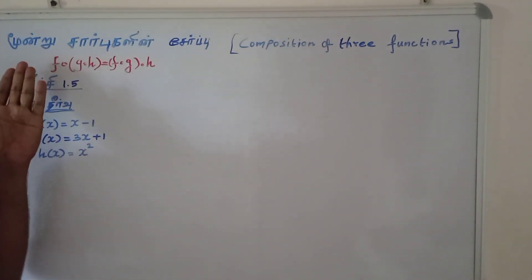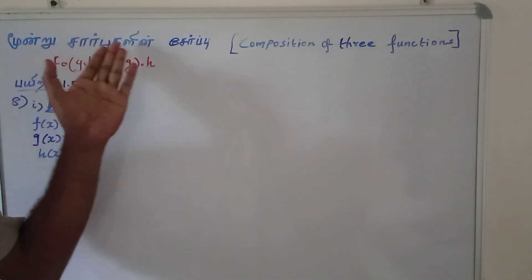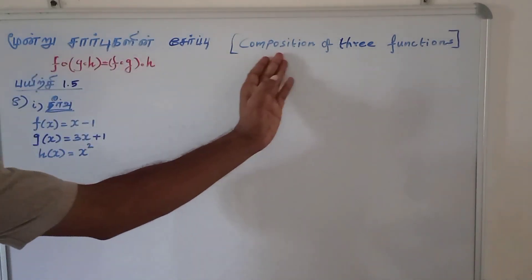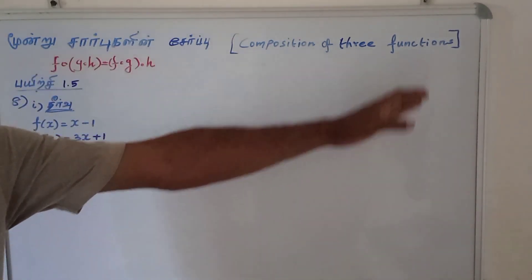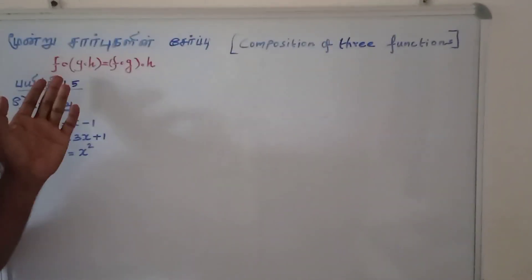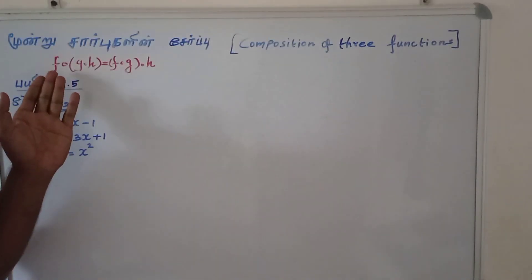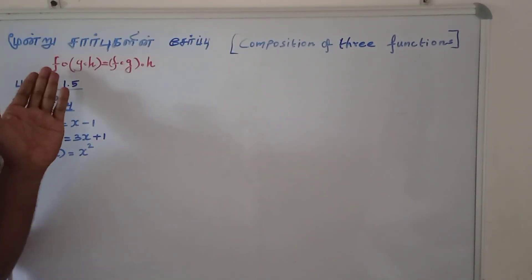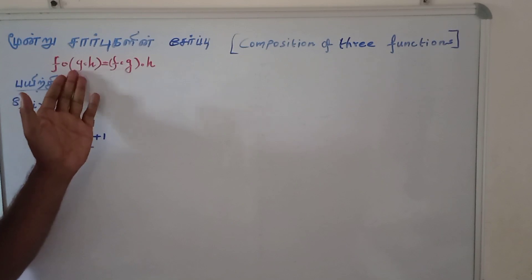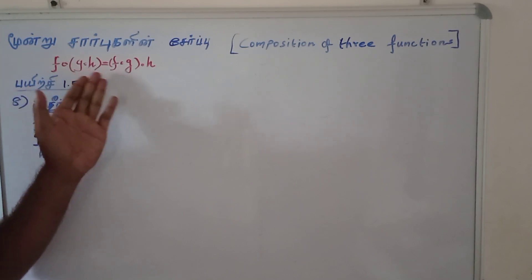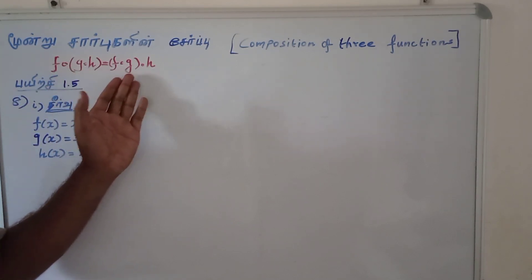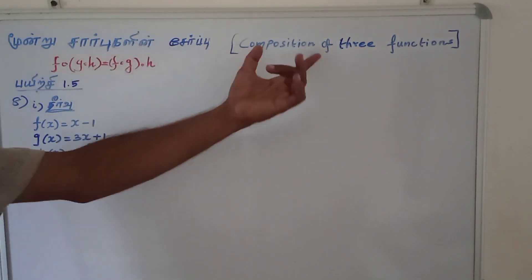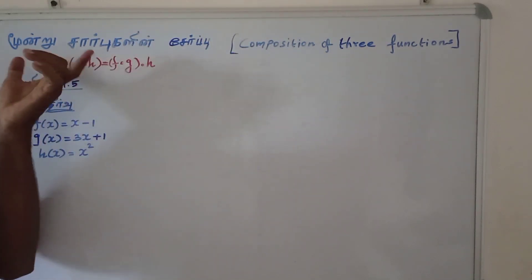I am going to show you three functions — the composition of three functions. Three functions: F, G, H. F∘G∘H is equal to F∘G∘H. This is the composition of three functions.